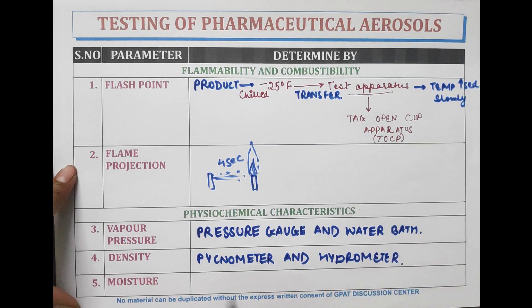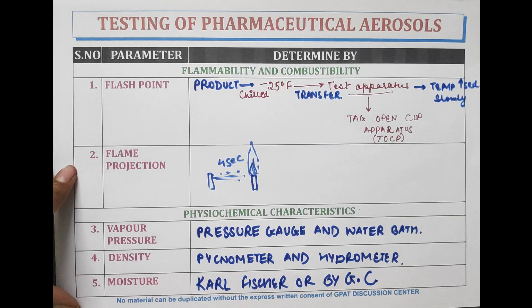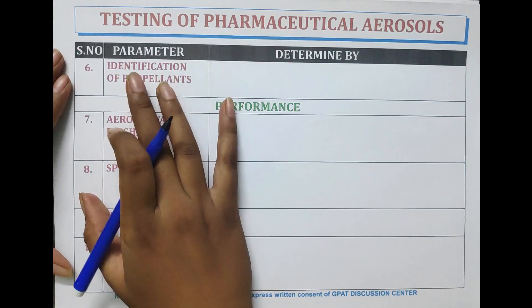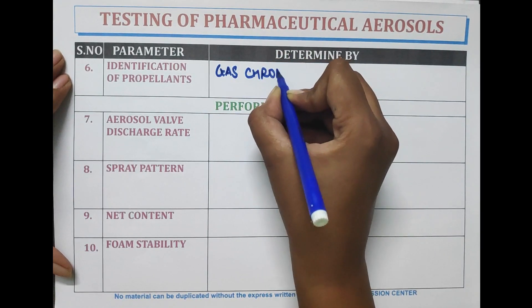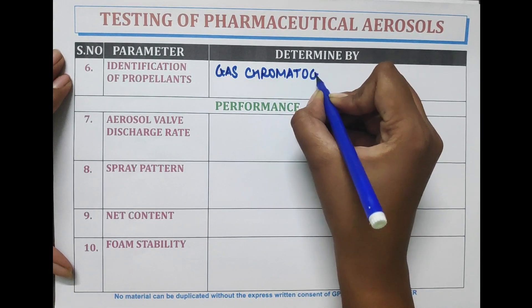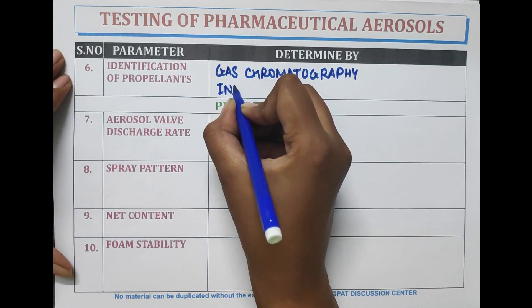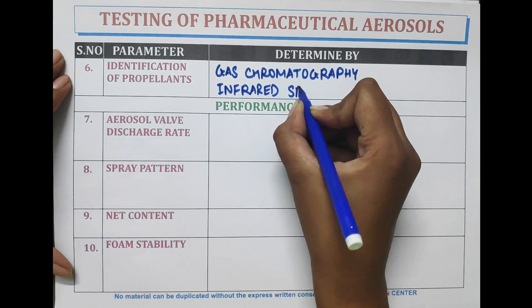After density, moisture is measured by Karl Fischer method, or by gas chromatography (GC). Identification of propellants: the propellants used in aerosols are identified by gas chromatography (GC) or by infrared spectroscopy.